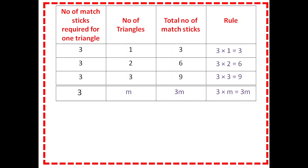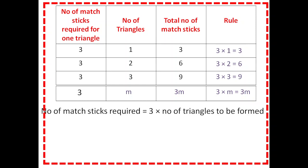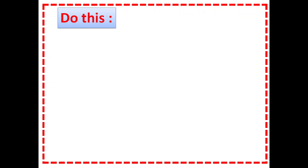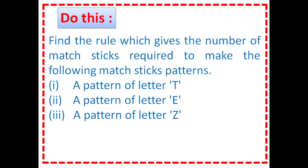So we can write: the number of matchsticks required is equal to three multiplied by the number of triangles to be formed. Here, M represents the number of triangles. This is called the rule to make triangles, and M is called the variable. I hope all of you understand the concept of variable and algebraic rules. Now try to answer the question and discuss with your friends. Thank you for watching.